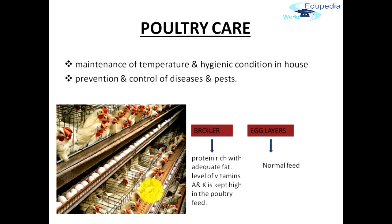Now that we know what a broiler is, let's talk about some poultry care — what care should be taken to keep them away from disease and to increase the production and quality of eggs and meat. First is maintenance of temperature and hygiene conditions in the house. Wherever these birds are kept, the temperature has to be maintained at a normal level — not too high, not too low. Prevention and control of disease and pest is also one of the major steps that should be taken care of by the farmers.